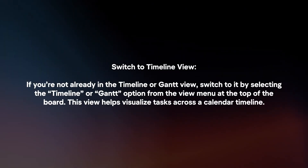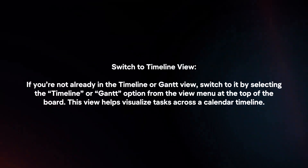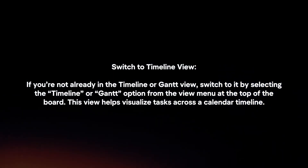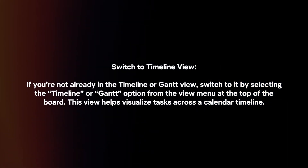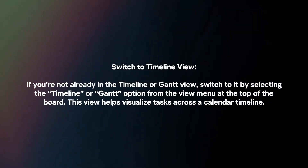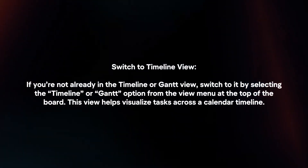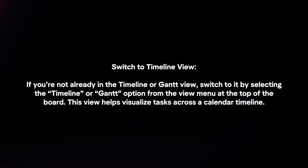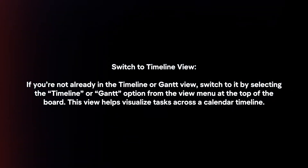Switch to timeline view. If you're not already in the timeline or Gantt view, switch to it by selecting the timeline or Gantt option from the view menu at the top of the board. This view helps visualize tasks across a calendar timeline.